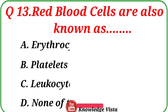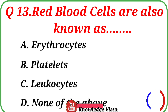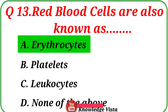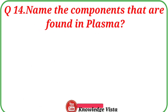Question number 13: Red blood cells are also known as — Option A: Erythrocytes. Option B: Platelets. Option C: Leukocytes. Option D: None of the above. The correct answer is option A, Erythrocytes. Red blood cells are also known as erythrocytes, and white blood cells are known as leukocytes.